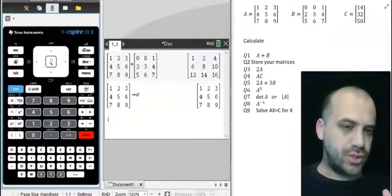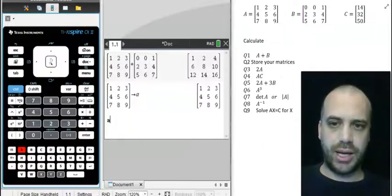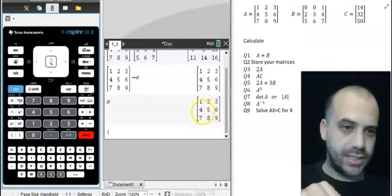And now if I want to use that matrix again in a calculation, I just type the letter A and it creates that matrix.